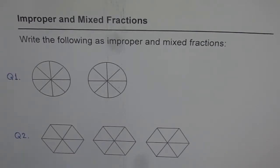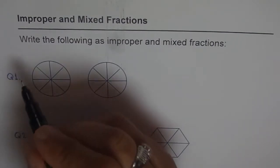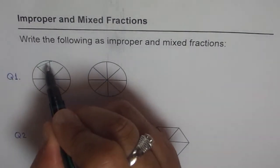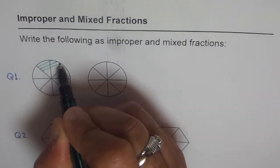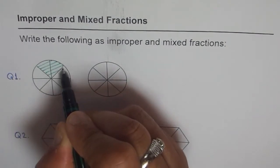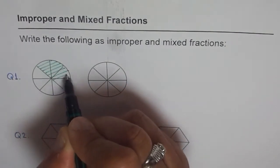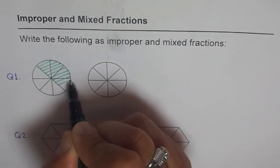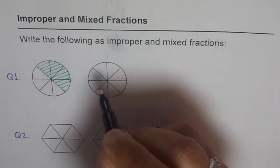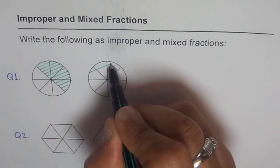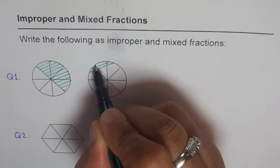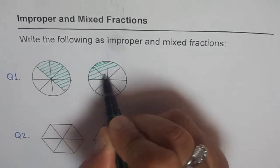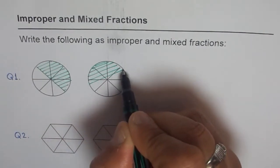So I'll shade some of them in color green and you have to write it in improper and mixed fractions. So here we go. In this particular shape, I'm shading half of the first one, and in the other one, I'm shading more than half. If I shade more than half and add them together, then we get more than a whole.